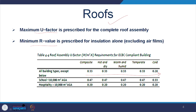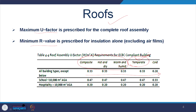For roofs, there is no difference in prescribed U values between composite, hot dry, warm humid, and temperate climates, because roof heat gain is largely due to solar radiation — which is similar across all four. In cold climates, however, the temperature differential is high, so the assembly U factor is proposed to be lower. School buildings, since they are daytime-use buildings, are proposed to have relatively higher and more lenient U values.